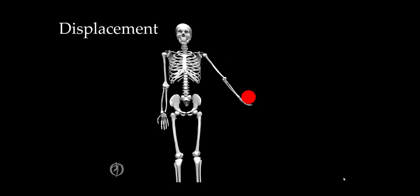Next, we have displacement, which is the change in position. We can talk about a linear displacement, which is the change in position from one moment in time to another. We need time to change position because you can't be in two different positions at the same point in time. The angular displacement is the change in orientation from one moment in time to another. Angular displacements are important because they are the joint motions that we started discussing earlier.